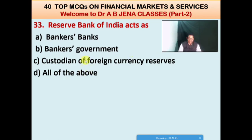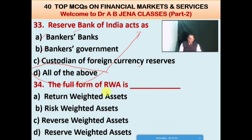Next MCQ: the Reserve Bank of India, the Central Bank of India, acts as what? A: banker's bank, B: banker to the government, C: custodian of foreign currency reserves, D: all the above. D is the right option — RBI acts as banker to the banks, banker to the government, and custodian of foreign currency reserves. Next MCQ: the full form of RWA stands for what? A: return weighted assets, B: risk weighted assets, C: reserve weighted assets. B is the right option — RWA stands for Risk Weighted Assets.